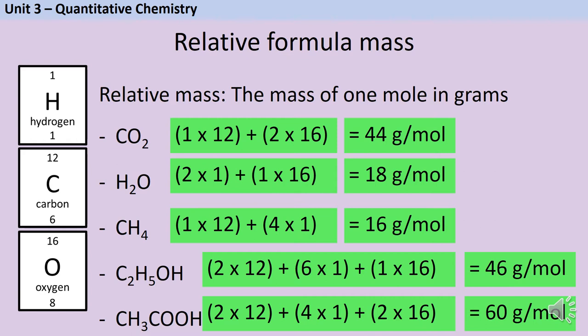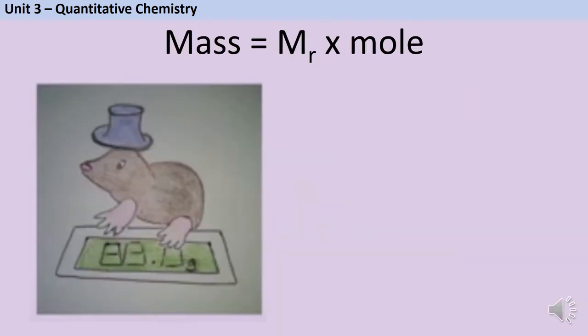We're now going to use these relative formula masses in our next calculation. We're going to carry out the exact same operation that we went through before, only this time we're going to give you a calculation to help. The mass of a sample is equivalent to the relative formula mass of the molecule we're looking at multiplied by the number of moles of that molecule. This can be shortened to mass equals Mr times mole, and to help you remember here's Mr. Mole having his mass confirmed by a scale.